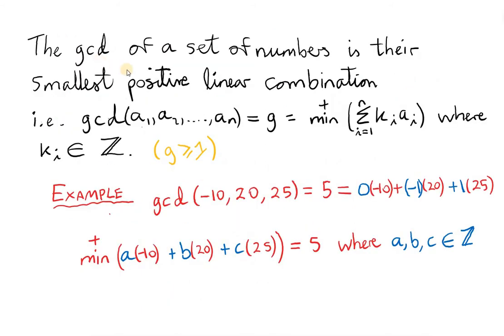The main step in proving this theorem is to prove this statement: the GCD of a set of numbers is their smallest positive linear combination. That is, if we take the GCD of the set of numbers a1 to an and call it g, then g must be the minimum positive linear combination of all the a's. The coefficients ki in that linear combination must be integers. For example, the GCD of the integers minus 10, 20, and 25 equals 5, and we can write 5 as a linear combination of minus 10, 20, and 25, where the coefficients k1, k2, and k3 are integers.